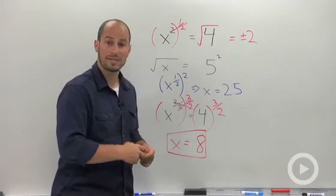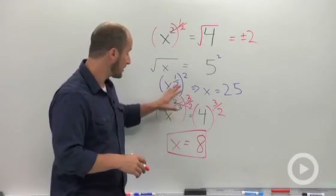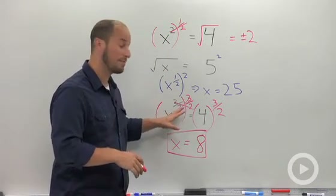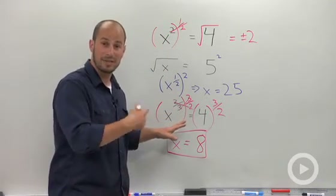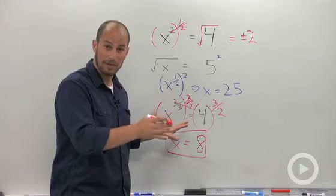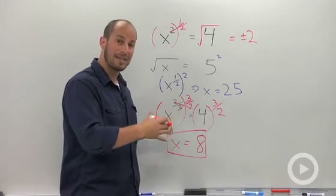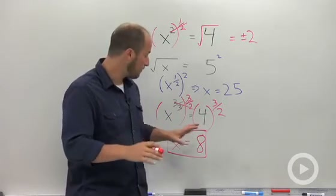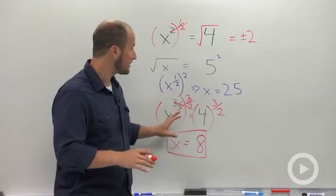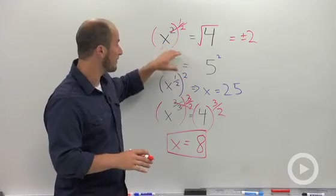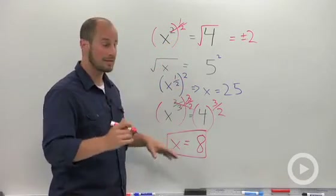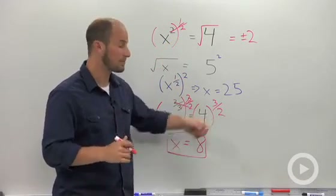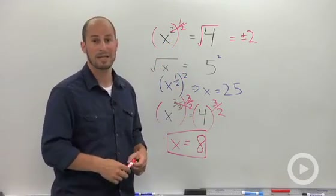Really, all we have to do in solving these is multiply — typically just take it to the reciprocal power. If we're dealing with a negative exponent, there's a little bit of a tweak there, but pretty much the same concept as these, just our exponent is going to be a little bit uglier.